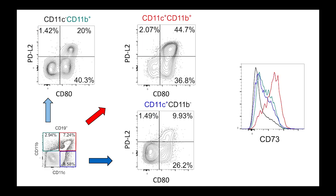These subsets were also heterogeneous with respect to expression of CD80, PDL2, and CD73, which in other contexts are markers of B-cell memory. CD11C and B double-positive cells were more likely to express these memory markers.